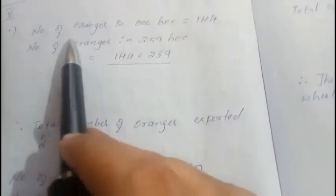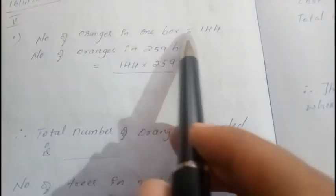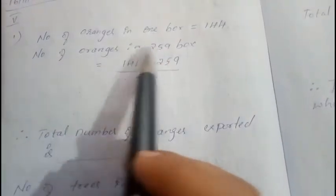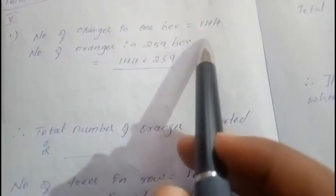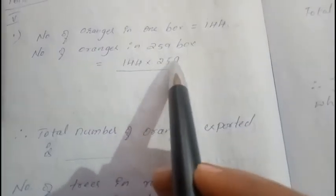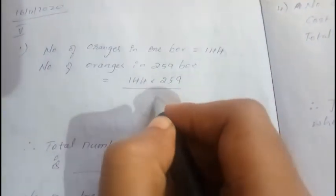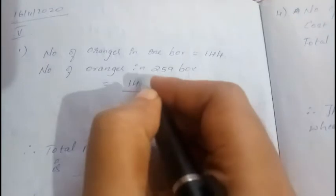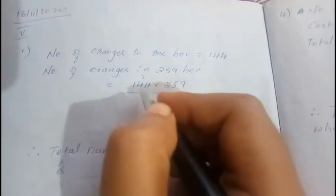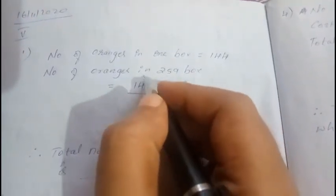For this I have already solved. Number of oranges in one box is 144. Number of oranges in 259 boxes - you need to multiply 144 into 259. Here we have 9 fours, how much? 9 fours 36, right? Write 6 below, 3 carry. 9 fives 36, 36 plus 3 is 39, write 9 carry 3.